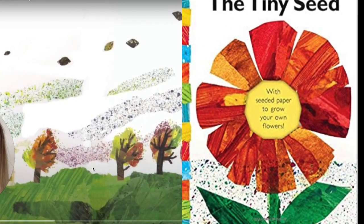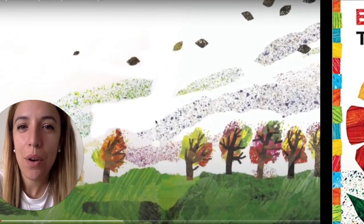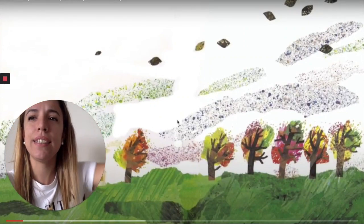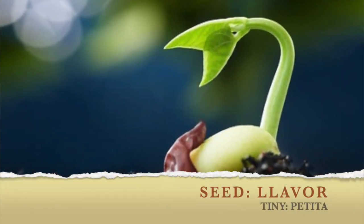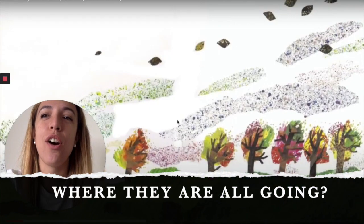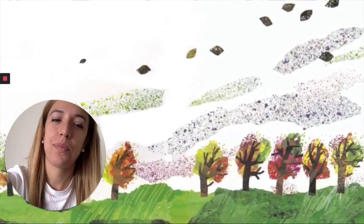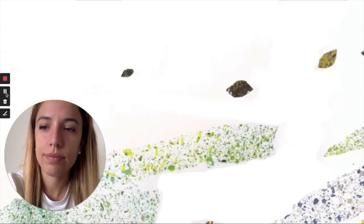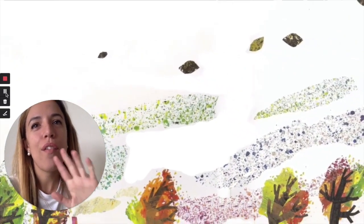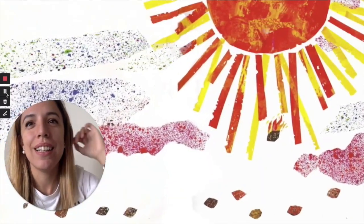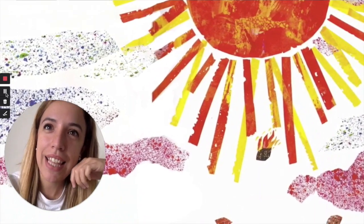So I'm going to explain the book about 'The Tiny Seed' from Eric Carle. We start: it is autumn, a strong wind is blowing. It blows flower seeds high in the air. One of the seeds is tiny, smaller than the others. But where are they all going? One of the seeds flies higher than the others — up, up, up it goes — and the tiny seed sails with them.